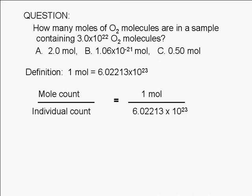We can rearrange this equation to solve for the mole count. Essentially, what we end up doing is multiply the given individual count 3.0 times 10 to the 22nd by the ratio of 1 mole to Avogadro's number.